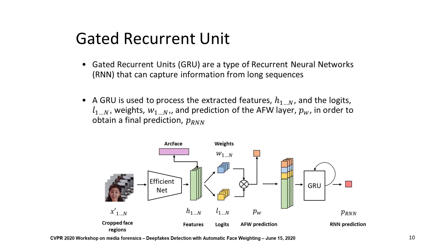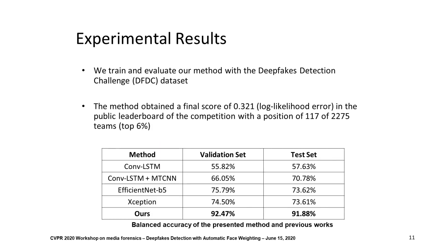Finally, we use a gated recurrent unit. Gated recurrent units are a type of recurrent neural network that can capture temporal information from short and long sequences. In this work, our gated recurrent unit has as input the extracted features from EfficientNet, and the logits, weights, and the prediction of the Automatic Face Weighting.